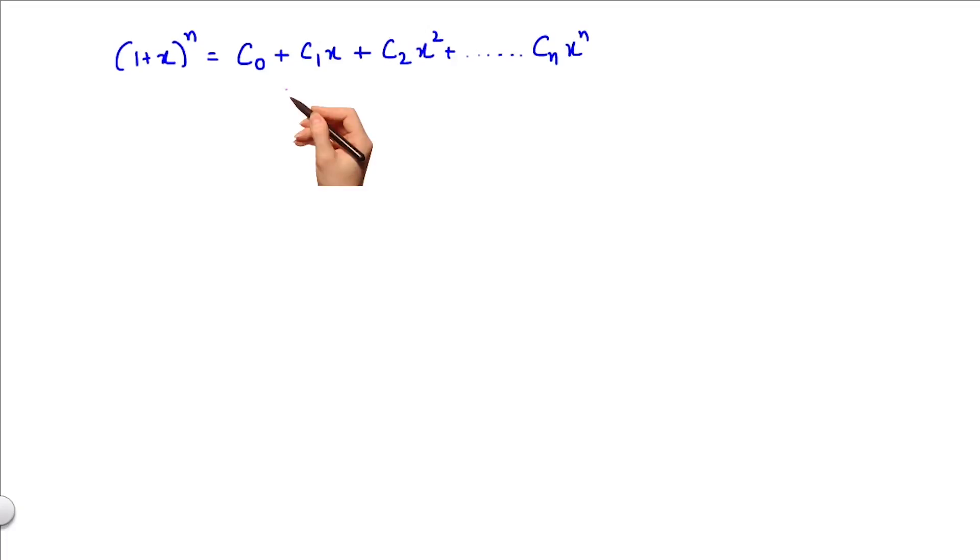We have already seen that in the expansion of (1+x)^n, if we put x equals minus 1, we get c₀ minus c₁ plus c₂ until (-1)^n cₙ equals 0. That is, summation of (-1)^r cᵣ where r varies from 0 to n equals 0.